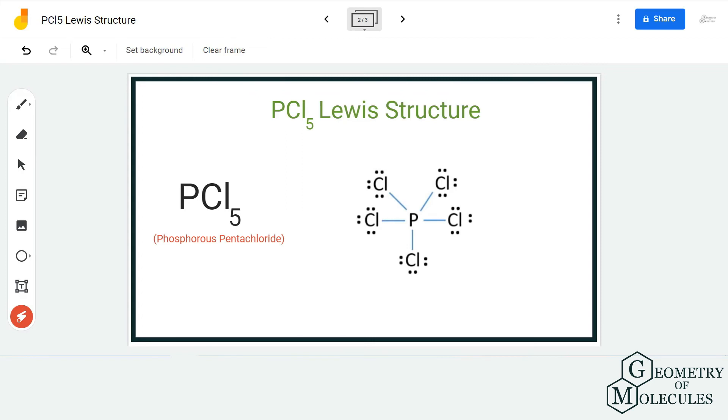Now if you look at this structure, you will see that all chlorine atoms have a complete octet because they have eight valence electrons in their outermost shell. But when we come to the phosphorus atom, it has 10 valence electrons in its outermost shell.